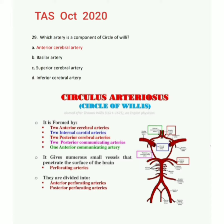Now I am sharing how the Circle of Willis is formed. It is formed by two anterior cerebral arteries, two internal carotid arteries, two posterior cerebral arteries, two posterior communicating arteries, and one anterior communicating artery. It gives numerous small vessels that penetrate the surface of the brain, called perforating arteries.